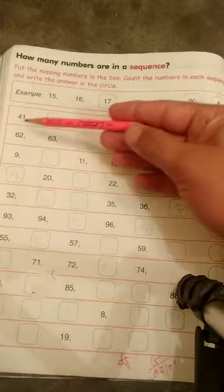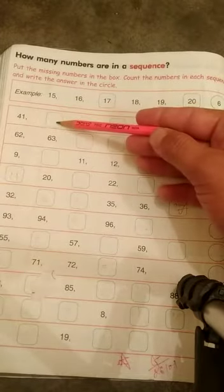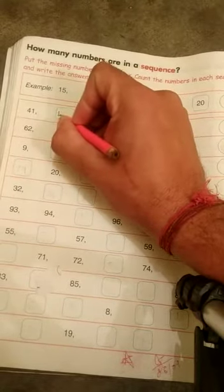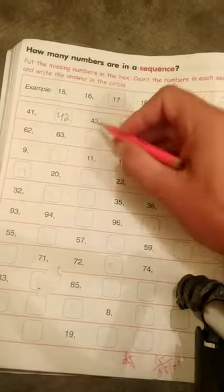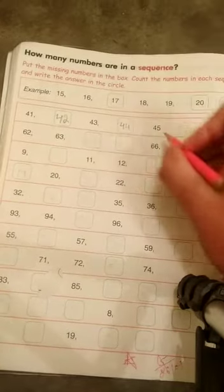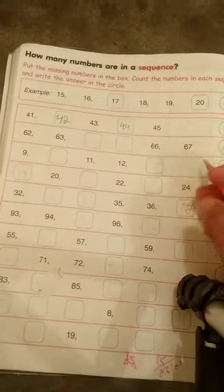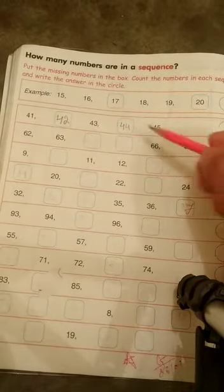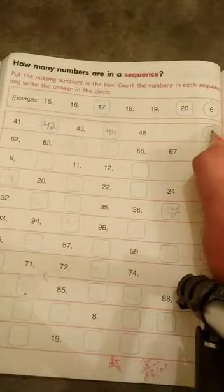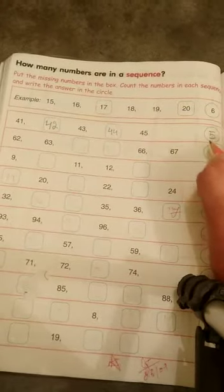Next question is 41, empty box, 43, empty box, then 45. Okay, so 41 ke baad, what comes beta? 41 ke baad, 42, then 43, then 44, and then 45. Now we have to count this beta, and write the total number here: 1, 2, 3, 4, and 5. And then write here 5 in this circle. Okay.